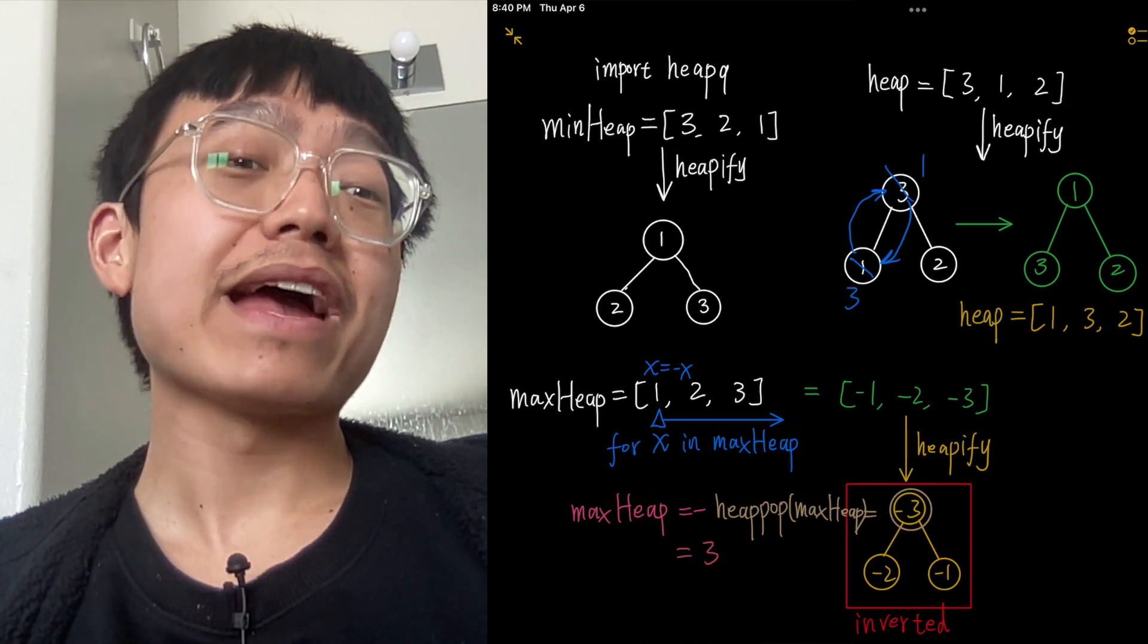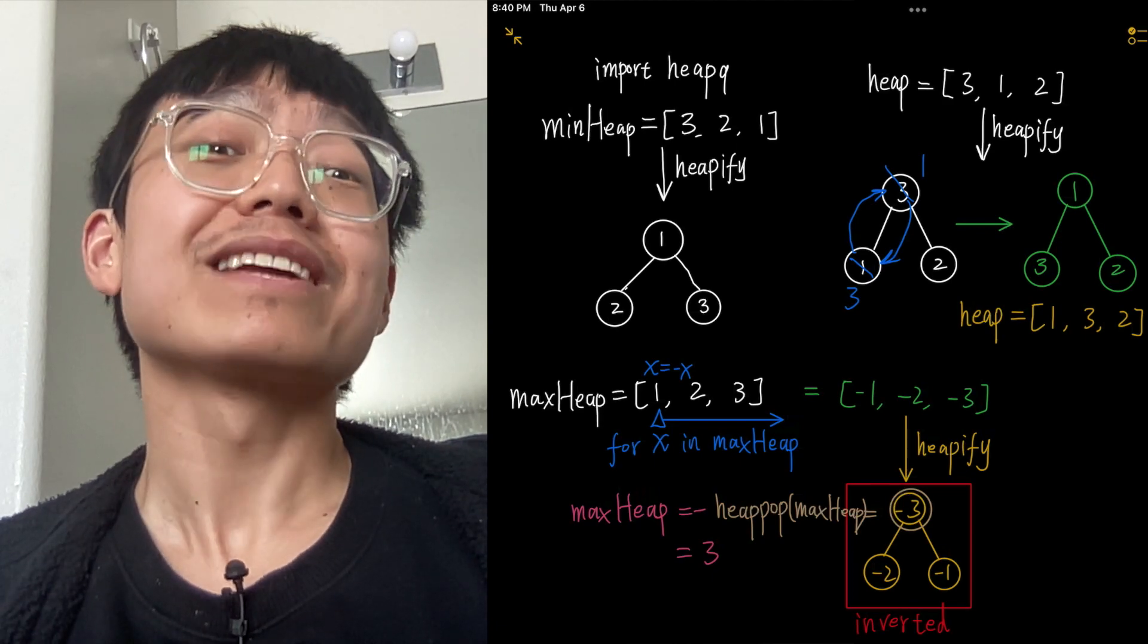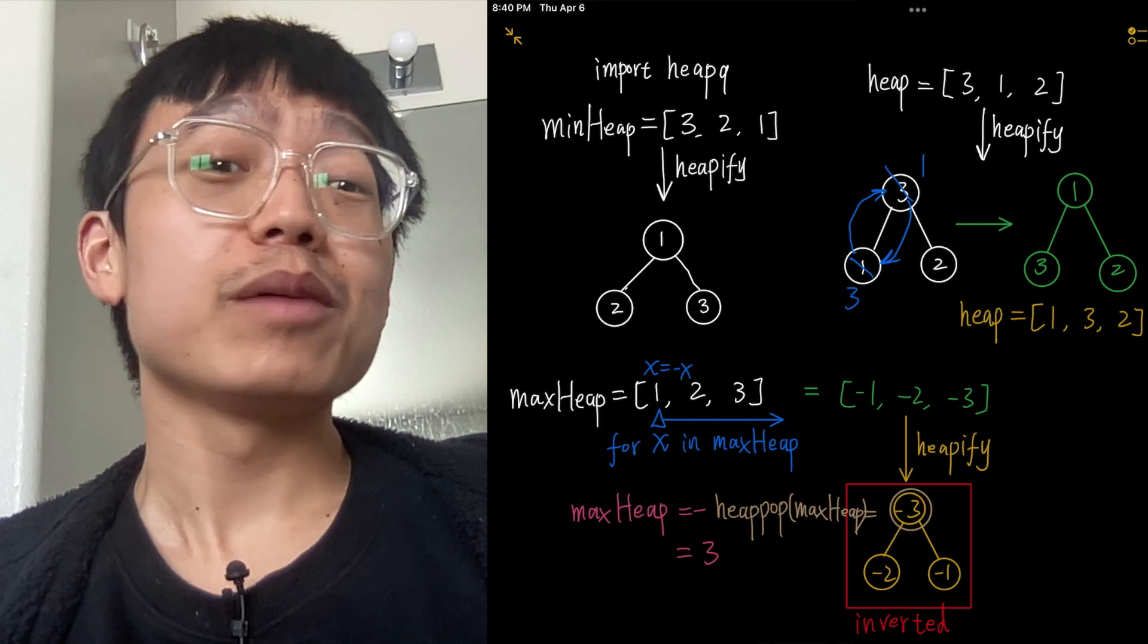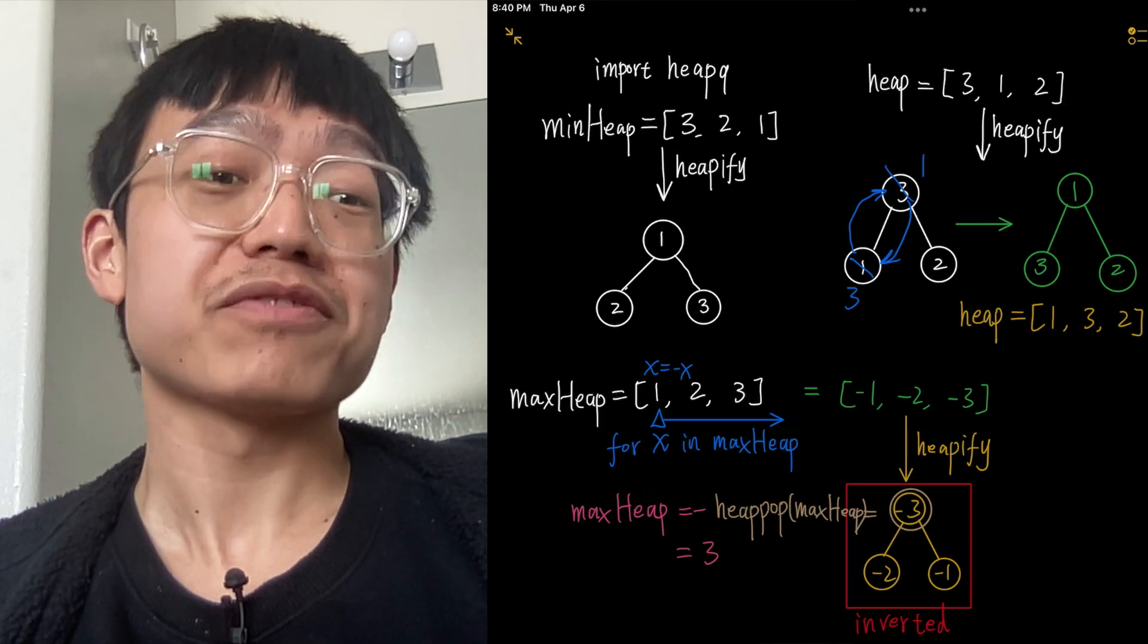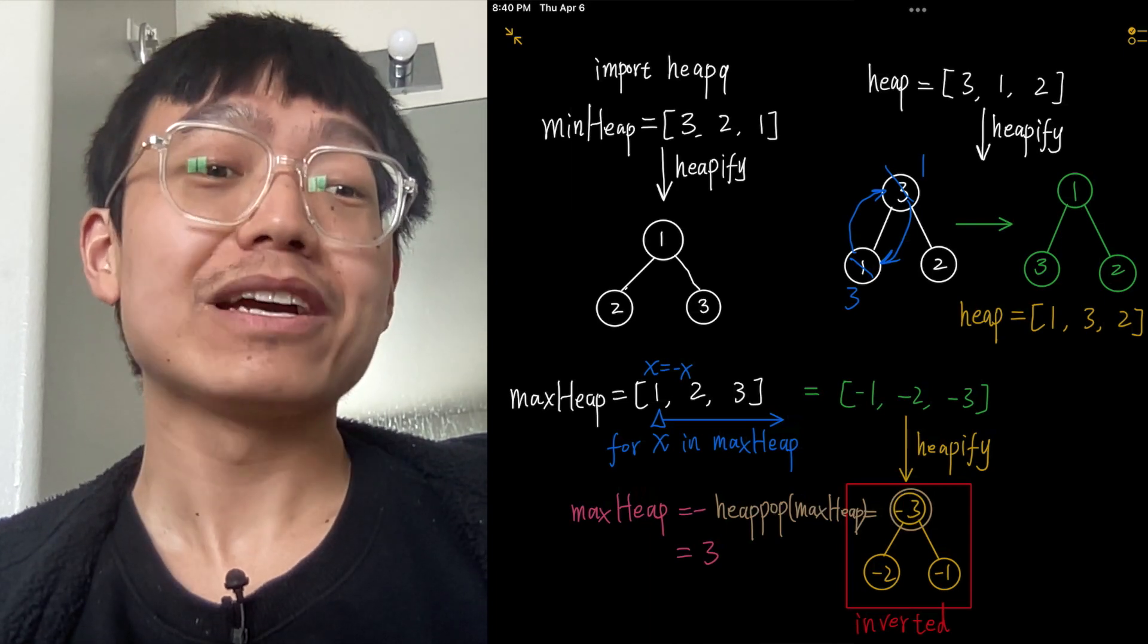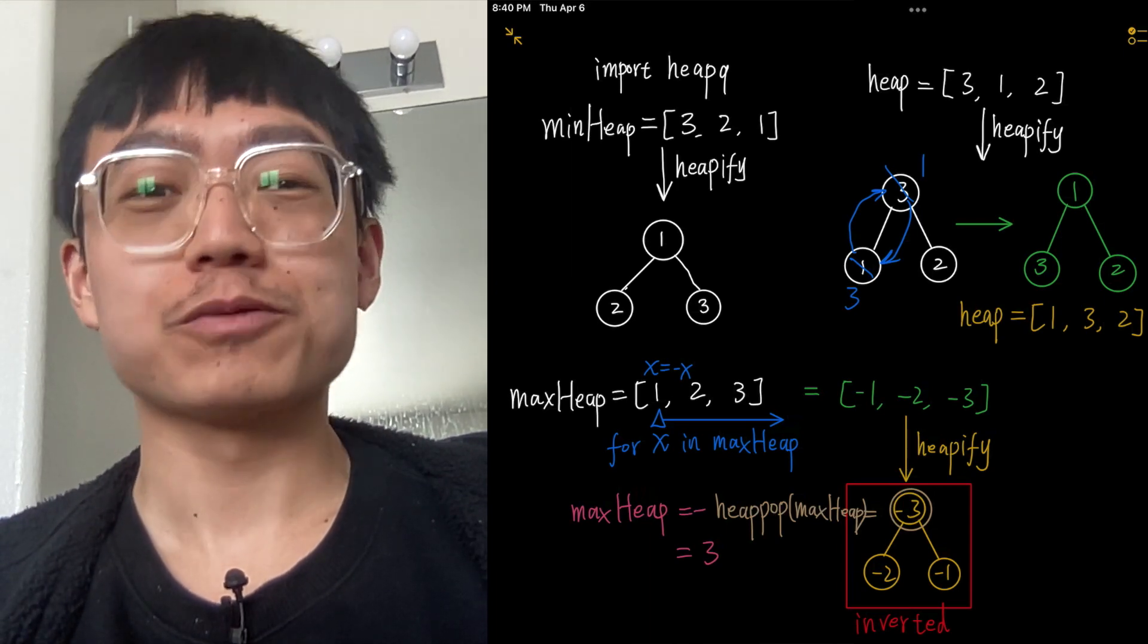Now we have a maximum heap indirectly created using heapq. We can use other heapq functions with the modified values, but we must multiply the results by -1 to convert them back to the original values.